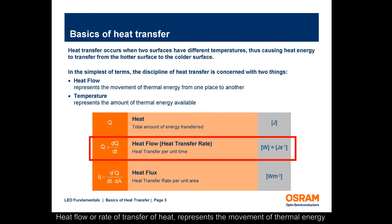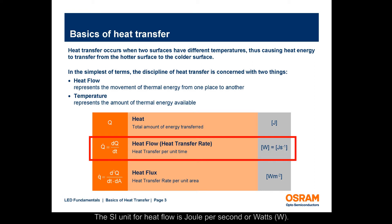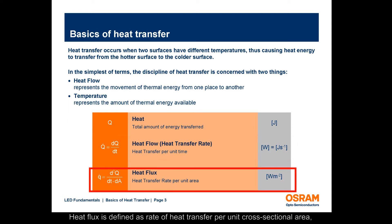Heat flow, or rate of transfer of heat, represents the movement of thermal energy from areas of high temperature to areas of lower temperature. The SI unit for heat flow is Joule per second, or watts. Heat flux is defined as rate of heat transfer per unit cross-sectional area, resulting in units of watts per square meter.